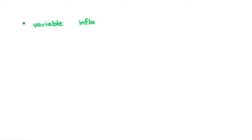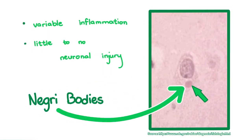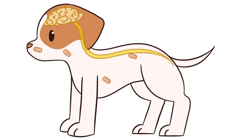Interestingly, histopathologic examination reveals variable inflammation and little to no neuronal injury. You can find Negri bodies in the cytoplasm of neurons, but everything else looks structurally sound — which is pretty paradoxical considering all the clinical signs and lethality of the disease. The virus still continues spreading, this time away from the brain, going from nerve to nerve and spreading to the rest of the organs, most importantly the salivary glands.